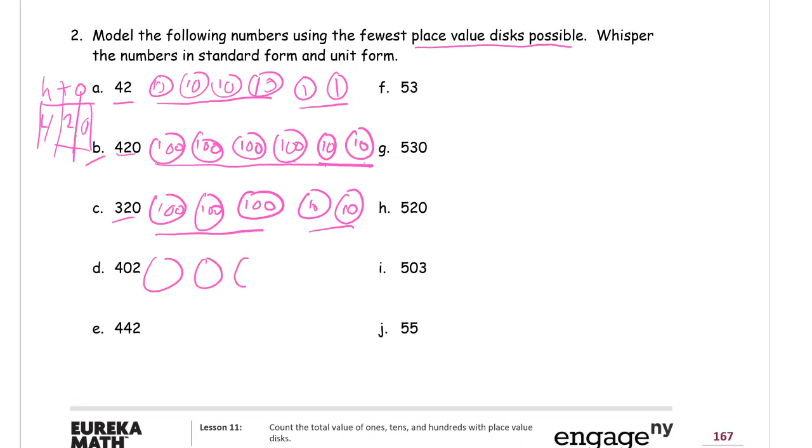This one. Okay, so those are all. This one came out really goofy. I'm going to do it over. There. So there's the 4 hundreds, and I need the 2 ones. This number is 402, and in unit form, it's 4 hundreds, 2 ones.